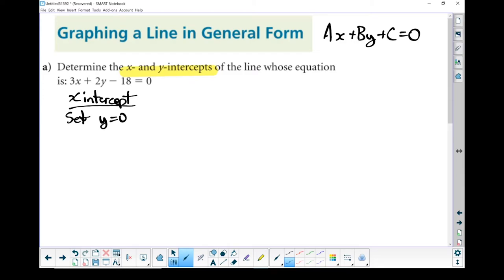So I'm going to rewrite my equation, and instead of my y, I'm going to put in a 0. So 3x plus 2 times, and instead of y, I'm going to put that 0 in, minus 18 equals 0.